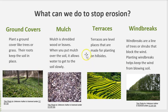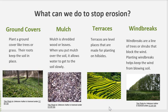A third thing you can do is terraces. Terraces are level places that are made for planting on hillsides. You can see how this hillside has been made into terraces. Another way to stop erosion is windbreaks — lines of trees or shrubs that block the wind. Planting windbreaks helps keep the wind from blowing the soil.